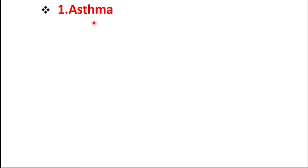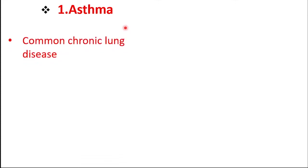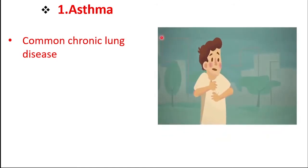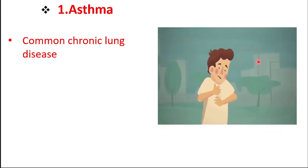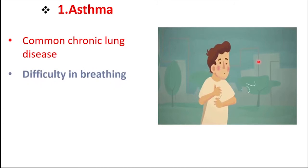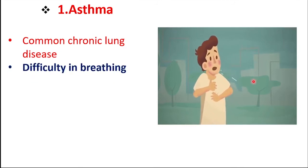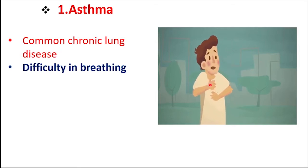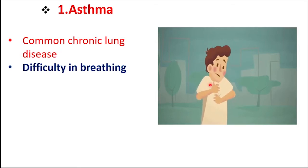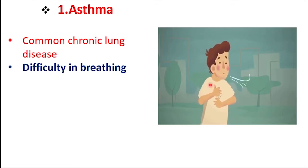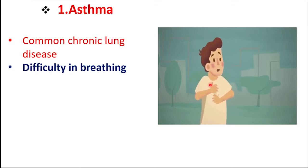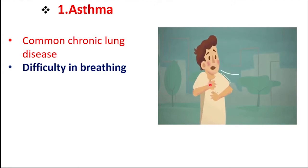The first one is asthma. It is the most common lung disease. It is a disorder of difficulty in breathing. What is the main cause of asthma? Asthma is caused due to the combined effect of genes and environment. The exact cause of asthma is not known till now.